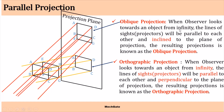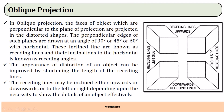In oblique projection, the observer looks towards the object from infinity and the lines of sight are parallel to each other and inclined to the plane of projection, giving a pictorial view that provides more information about the object's features, shape, and size. In orthographic projection it is difficult to visualize the shape and size from a single view, and it requires a minimum of two views for complete information, while oblique projection gives complete information in a single view.